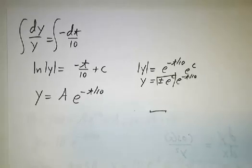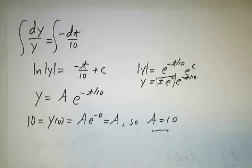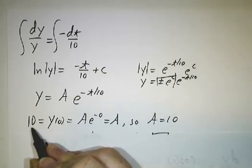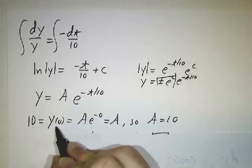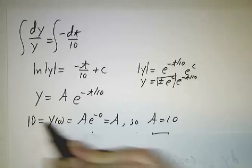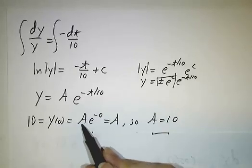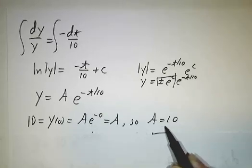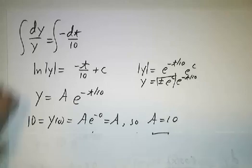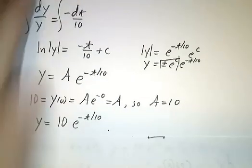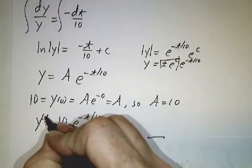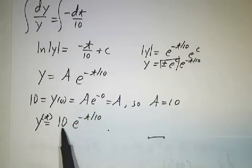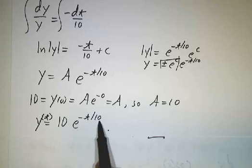Of course, it's not completely arbitrary because we know how much stuff there was at time 0. At time 0, we had 10 tons of waste. By our formula, that has to be A e to the minus 0, which is A. So, now we know that A is 10 tons. So, if you want to know how much stuff there is at time t, the amount of toxic waste at time t is 10 e to the minus t over 10.